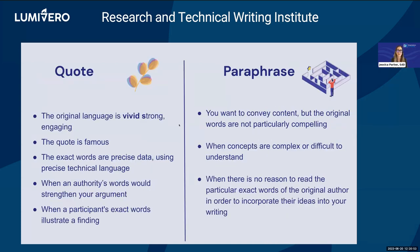I get this question a lot — students want rules of thumb around quotes, like how many times can I quote in my dissertation? There is no perfect answer. Some professors say no more than one quote per page; some say no quotes at all. But I think there is a time and a place for direct quotations. I tend to use them when the original language is really vivid, strong, and engaging, or if it's famous. Or maybe there's a string of precise data you need to reference specifically in a technical report. Or if the original source's words would strengthen your argument, then you could use that as a direct quote. But for the most part, you want to paraphrase.